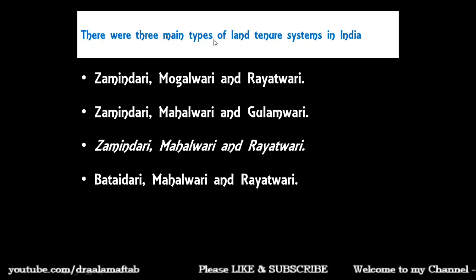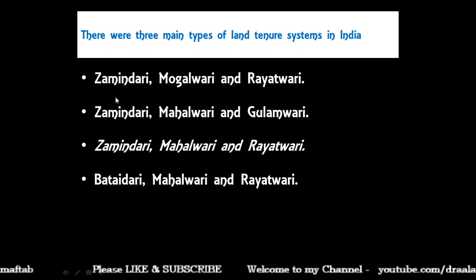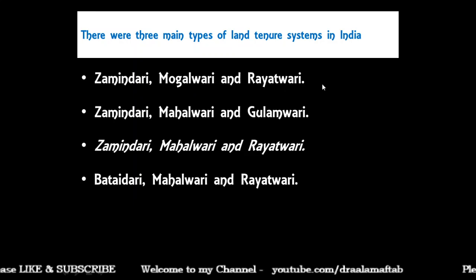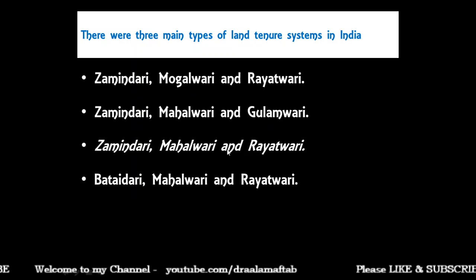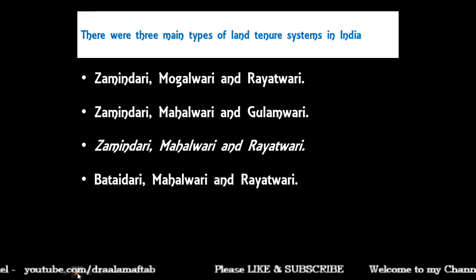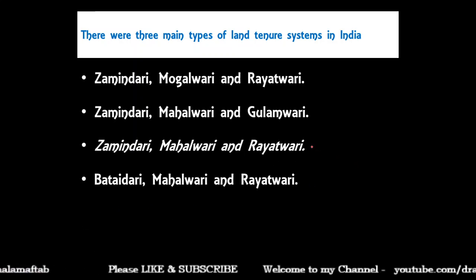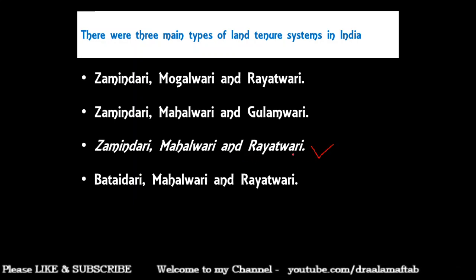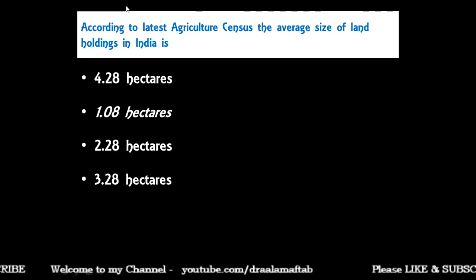There were three main types of land tenure systems in India. The correct answer is Zamindari, Mahalwari, and Ryotwari. Other incorrect options included combinations with Mughalwari, Gulamwari, and Bataidari.